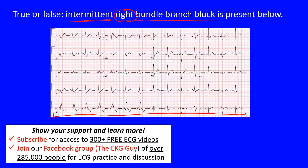We've had a number of videos on the pathophysiology, so the main things to remember: with right bundle branch block, the right precordial leads V1 to V2 should show RSR' complexes - those 'rabbit ears' - where you have an R wave, an S wave, and an R prime. You can also see QR prime complexes, where there's a Q wave and an R prime, because the initial R wave is absent due to infarction in that area.